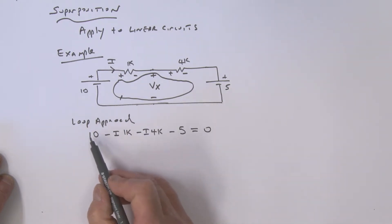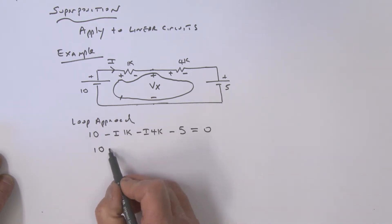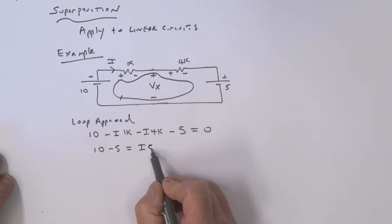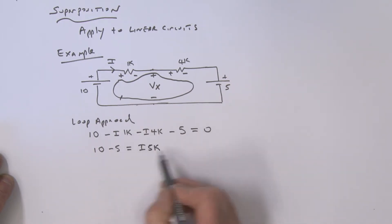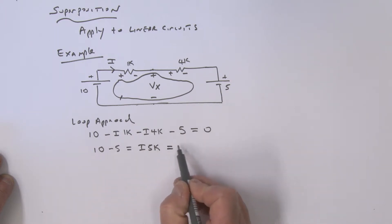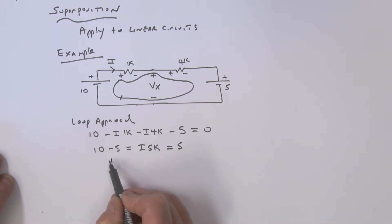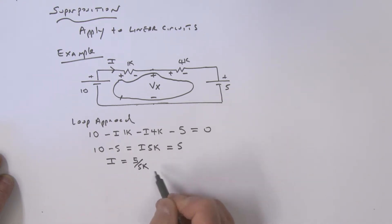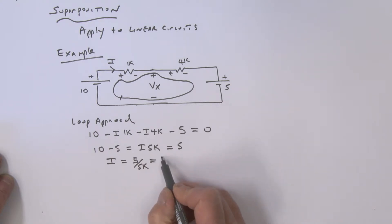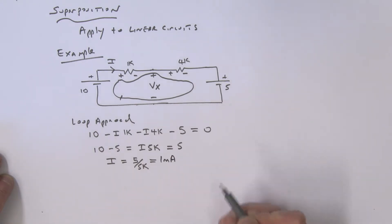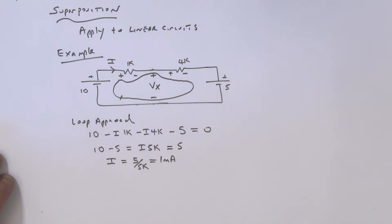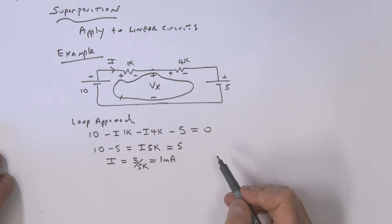Rearranging: 10 − 5 equals i×5k, which gives us 5 = i×5k. Therefore current i equals 5 divided by 5k, which equals 1 milliamp. So that's my current flowing in this circuit.